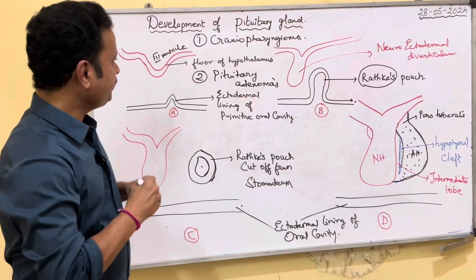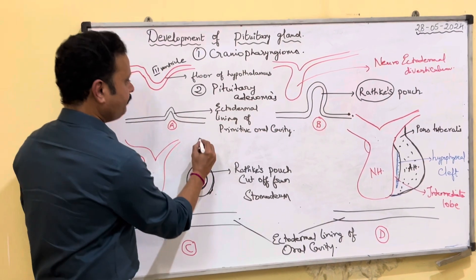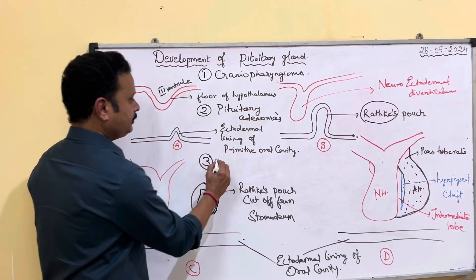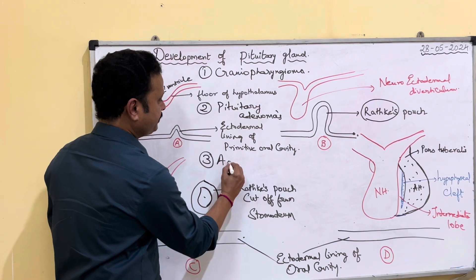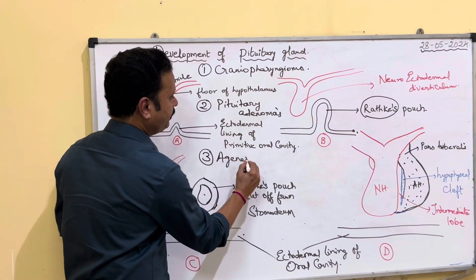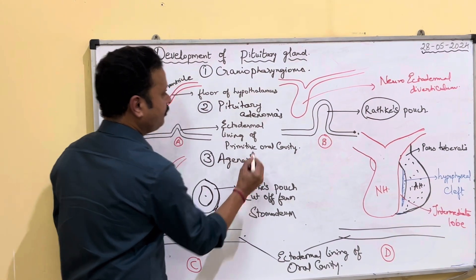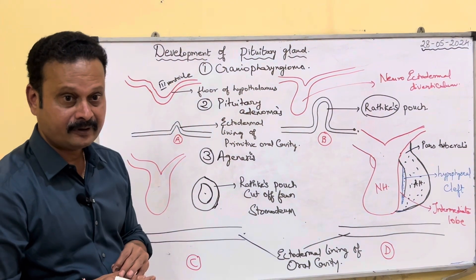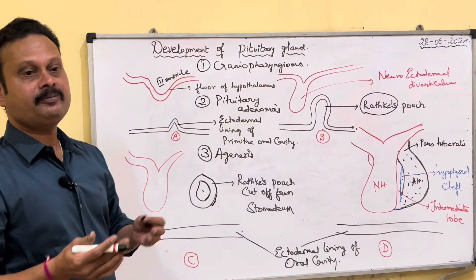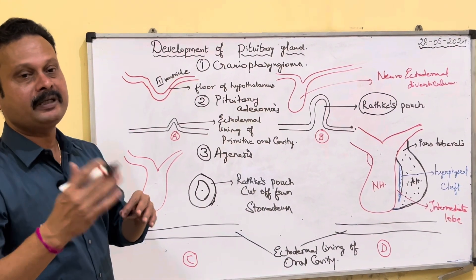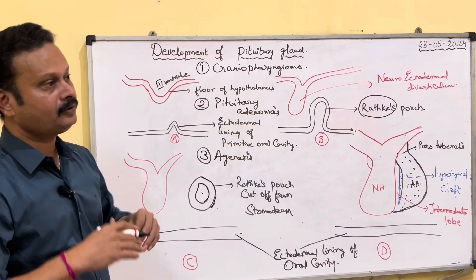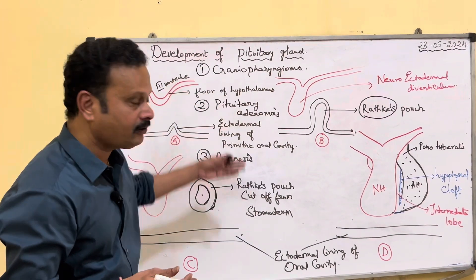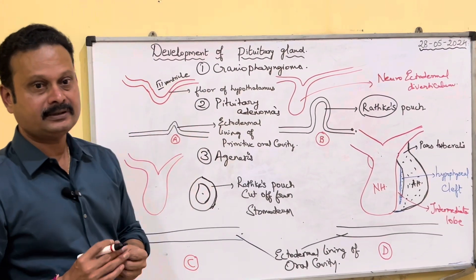Other anomalies include agenesis — very rarely there can be agenesis of the pituitary gland. Occasionally the pituitary gland may be found in the posterior wall of the pharynx. These are all the developmental anomalies.